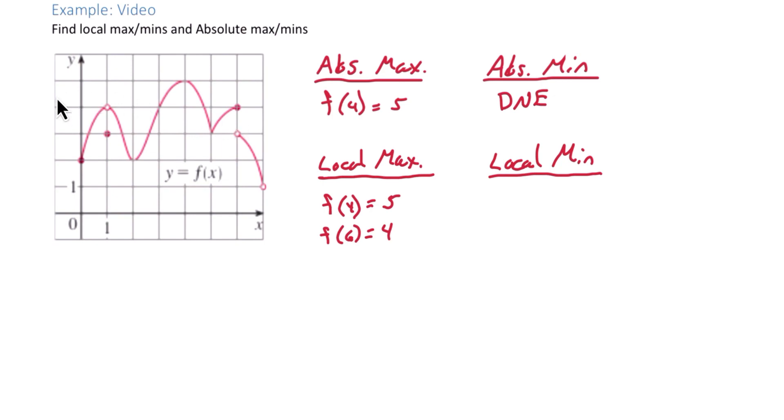Looking now at local mins, the way our book defines local minimums, the endpoint will not be included. So even though it looks like there is a lower value here, we're not going to include the endpoints when looking for local maxes and mins. They can be absolute, but not local.